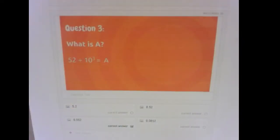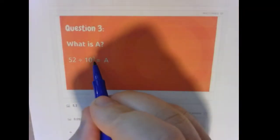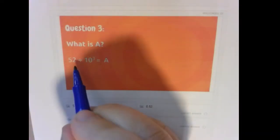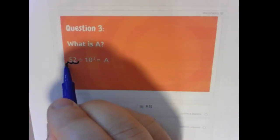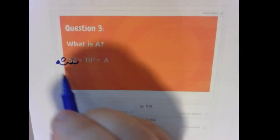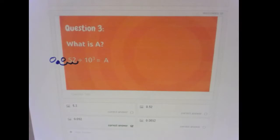All right, question three, what is A? So if we do 52 divided by 10 to the third power, or 52 divided by 1,000, what are we doing again? Think about this. Remember, the pattern we found is that whatever the power is, that's how many spots we're going to move the decimal. So if we move it one, two, three spots, 0 for the placeholder here. So it's 0.052.